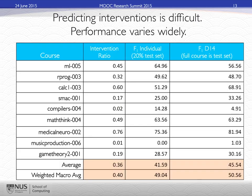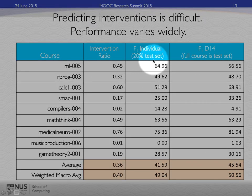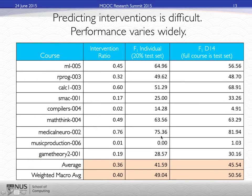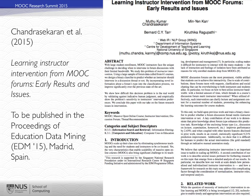One negative result from our research is that predicting interventions is really difficult, and performance varies widely according to the type of course and according to the instructor's personality. Although we have optimized the intervention prediction classifier, we find that the F1 score between courses varies widely, all the way from 0 to 75% accuracy. You can find more about this result and our methods in our upcoming EDM paper to be presented in June 2015.